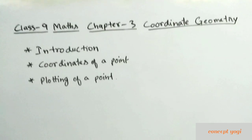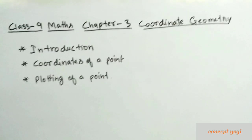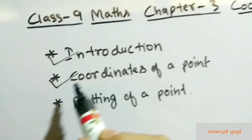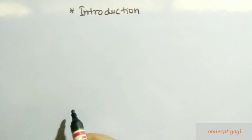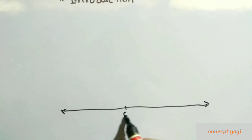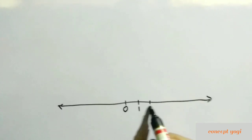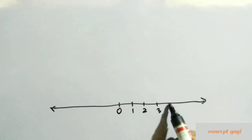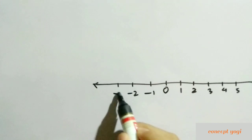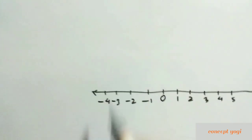In this video we'll discuss Class 9 Maths Chapter 3 Coordinate Geometry. First we'll discuss the introduction, then coordinates of a point, and after that plotting of a point. For the introduction, we'll draw a horizontal number line. Positive numbers go to the right side — one, two, three, four, five — and negative numbers go to the left side — minus one, minus two, minus three, minus four, and so on.